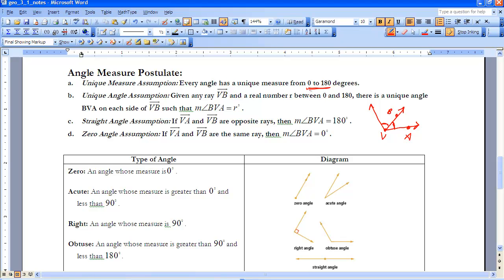Straight angle assumption. If VA and VB are opposite rays, that means they form a line from our previous discussion in Chapter 2. So if this is V, and this is A, and this is B, in order for it to be a straight angle, this would have a measure of 180 degrees.